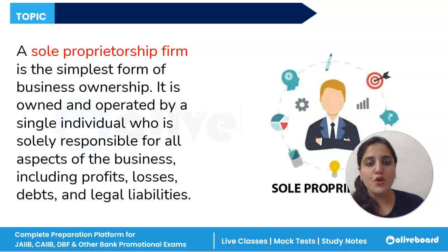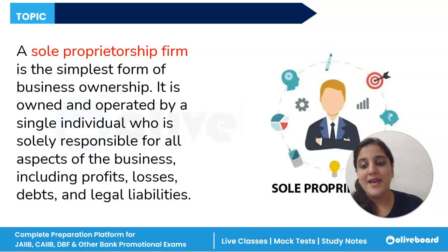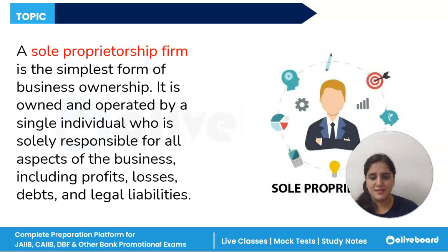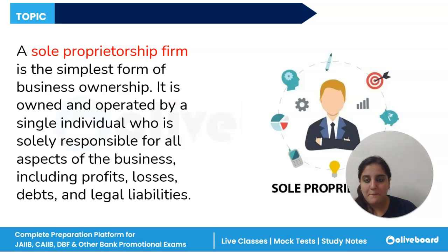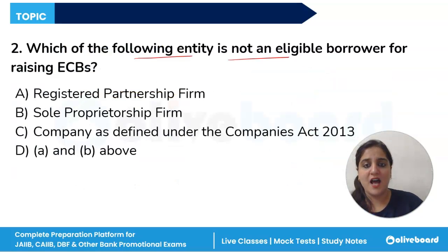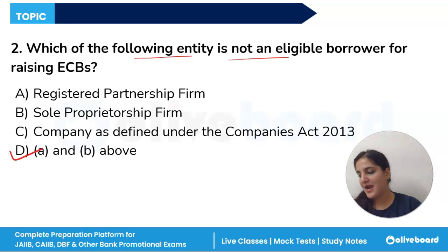Sole proprietorship is the simplest form of business ownership — owned and operated by a single individual who is solely responsible for all aspects. It is a type of business owned and run by one person with no legal distinction between the business and the owner. The correct answer is option D — both registered partnership firm and sole proprietorship firm are not eligible borrowers for raising ECBs.